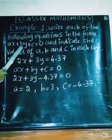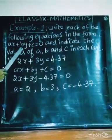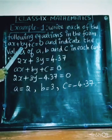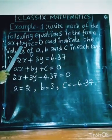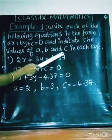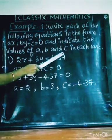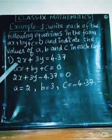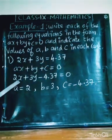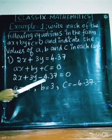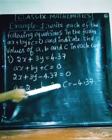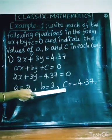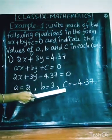So the general form is 2X plus 3Y minus 4.37 equal to 0, and the values are A equal to 2, B equal to 3, C equal to minus 4.37.